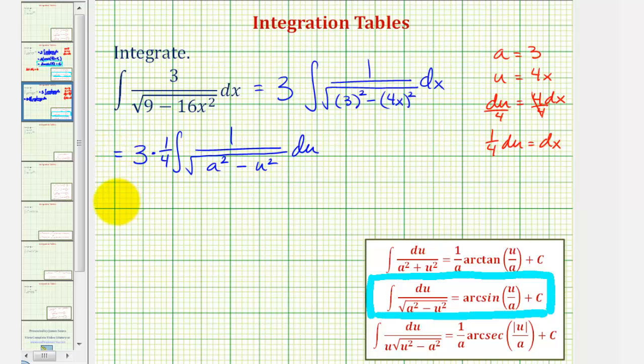Notice how we would have three-fourths times arcsine of u divided by a, which would be four x divided by three, plus we'll call it c sub one.